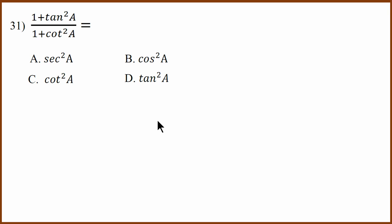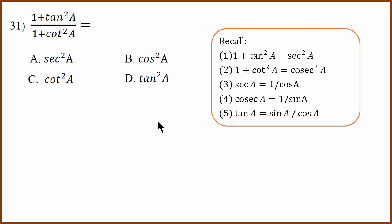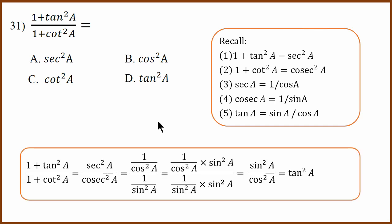Thirty-first question is a tricky question using two identities. 1 plus tan squared can be written as secant squared, and secant squared equals 1 by cos squared. 1 plus cot squared can be written as cosecant squared, which equals 1 by sin squared. So 1 by cos squared divided by 1 by sin squared, multiplying numerator and denominator by sin squared, gives sin squared divided by cos squared, which equals tan squared. Answer D.